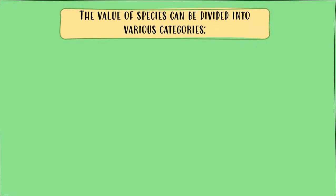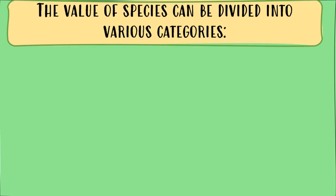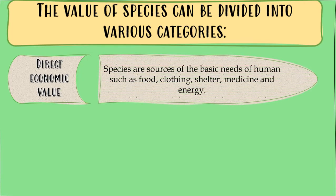Let us study the value of species and its categories. Number one is direct economic value. Species are sources of the basic needs of humans such as food, clothing, shelter, medicine, and energy.